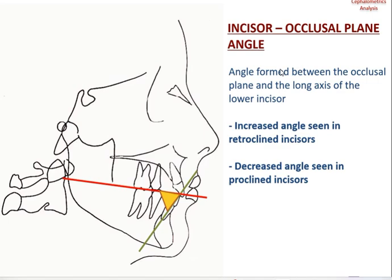The next parameter is the incisor to occlusal plane angle. You construct the occlusal plane and then draw the long axis of the lower central incisor; the angle formed between these two gives the incisor to occlusal plane angle. If you see an increased angle, the incisors are retroclined; if you see a decreased angle, the patient has proclined incisors.